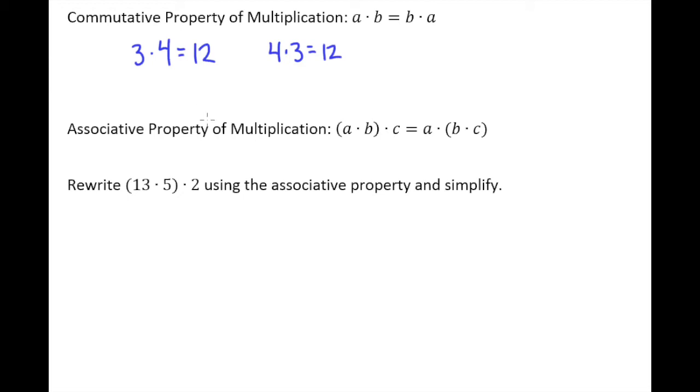The associative property of multiplication remember is just saying that if you have a set of three factors to multiply together, it doesn't matter whether you multiply the first two first and then the third, or the second and third and then the first. It doesn't matter at all.